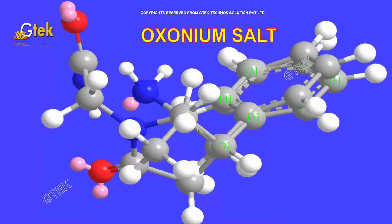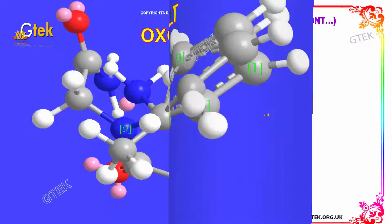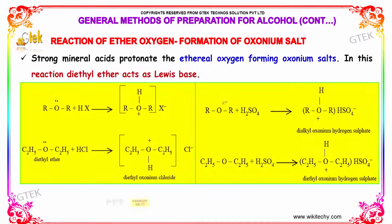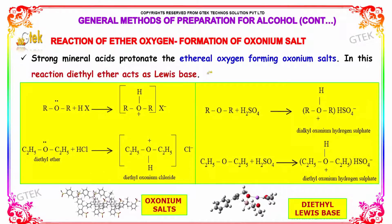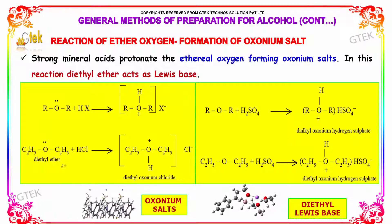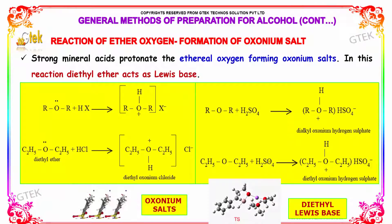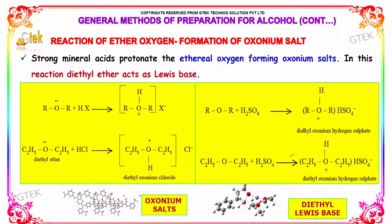This is a representation of oxenium salt. Strong mineral acids protonate the ethereal oxygen forming oxenium salts. In this reaction, diethyl ether acts as Lewis base. Here, diethyl ether — this is the transition state of diethyl ether — when reacted with H2SO4 or sulfuric acid, results in the formation of diethyl oxenium hydrogen sulfate.